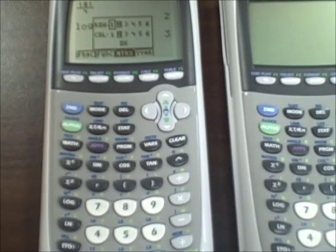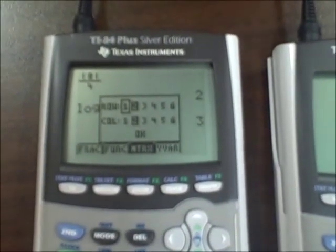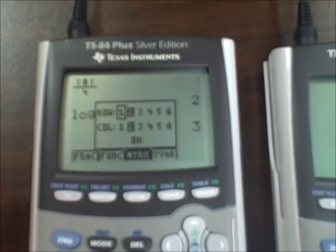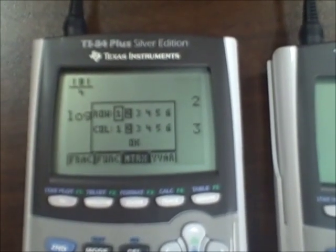Alpha zoom gives us our matrix key. I can build my matrix straight from here. I don't have to second matrix, right arrow, edit, and all of that. Save it as A. I can build it right on the screen. Just label its size and go for it.